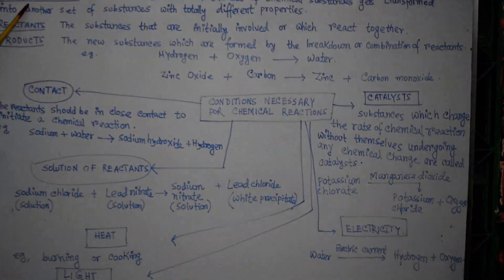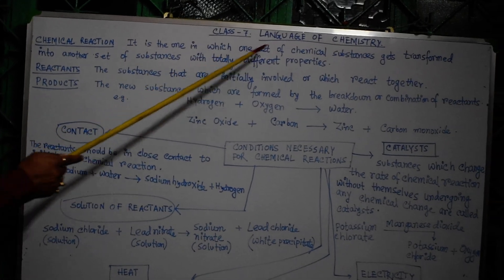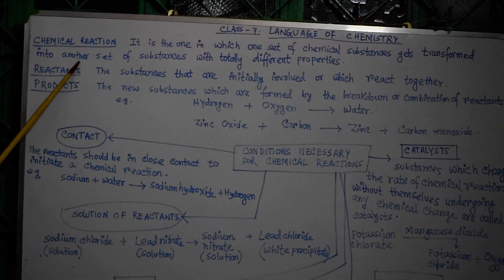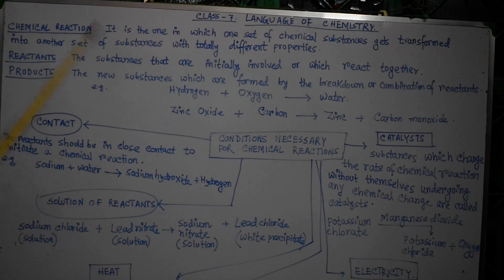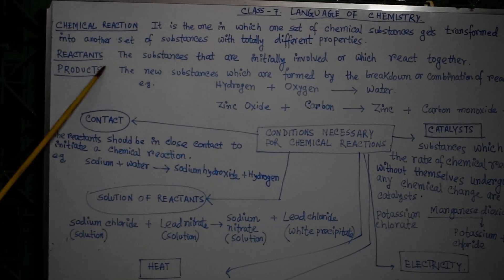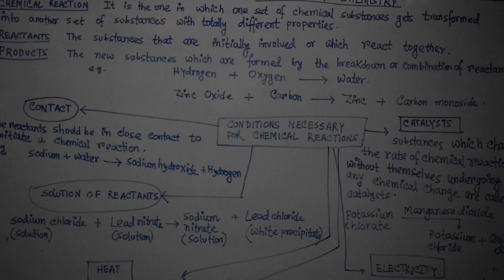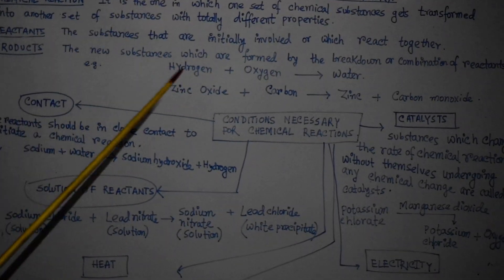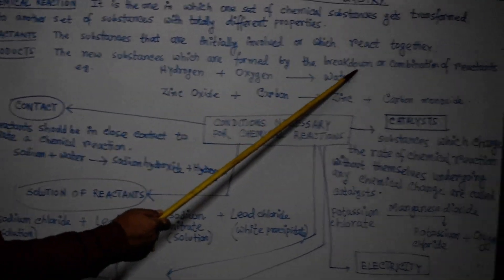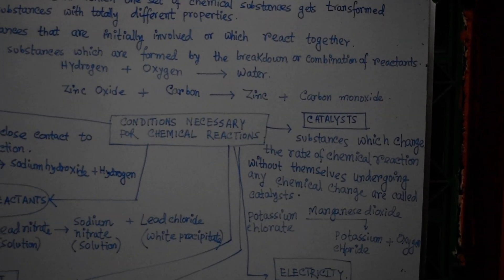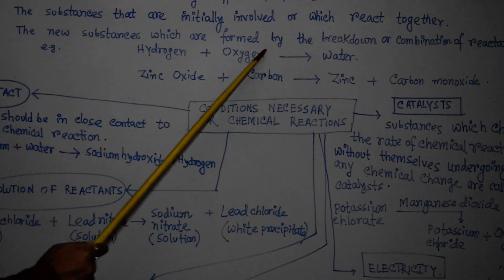Let us recap. A chemical reaction is one in which one set of chemical substances gets transformed into another set with totally different properties — new substances are formed with different properties. Reactants are the substances initially involved that are required for the initiation of chemical changes. Products are the new substances formed by the breakdown or combination of reactants. For example, hydrogen and oxygen combine to produce water — hydrogen and oxygen are the reactants and water is the product.